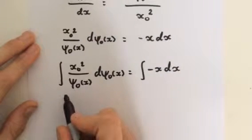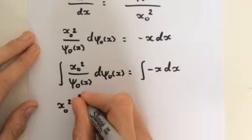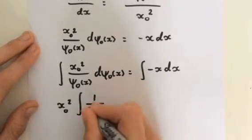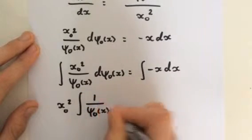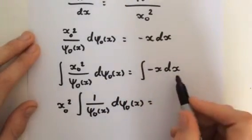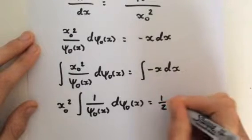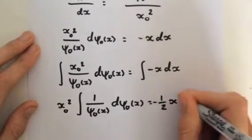So x_0 squared is a constant so we can bring that outside the integral sign and we get the integral of one over psi_0(x) d psi_0(x). And the integral of negative x with respect to x is simply negative one half x squared.